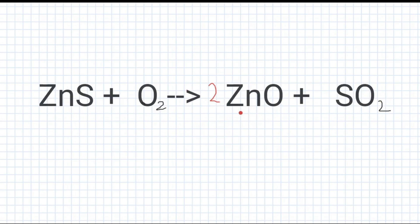Now when I did that, it seems that we have two zinc now, right? So now it has to be balanced. There's two zinc on the right side, there has to be two zinc on the left side. So let's add two here.